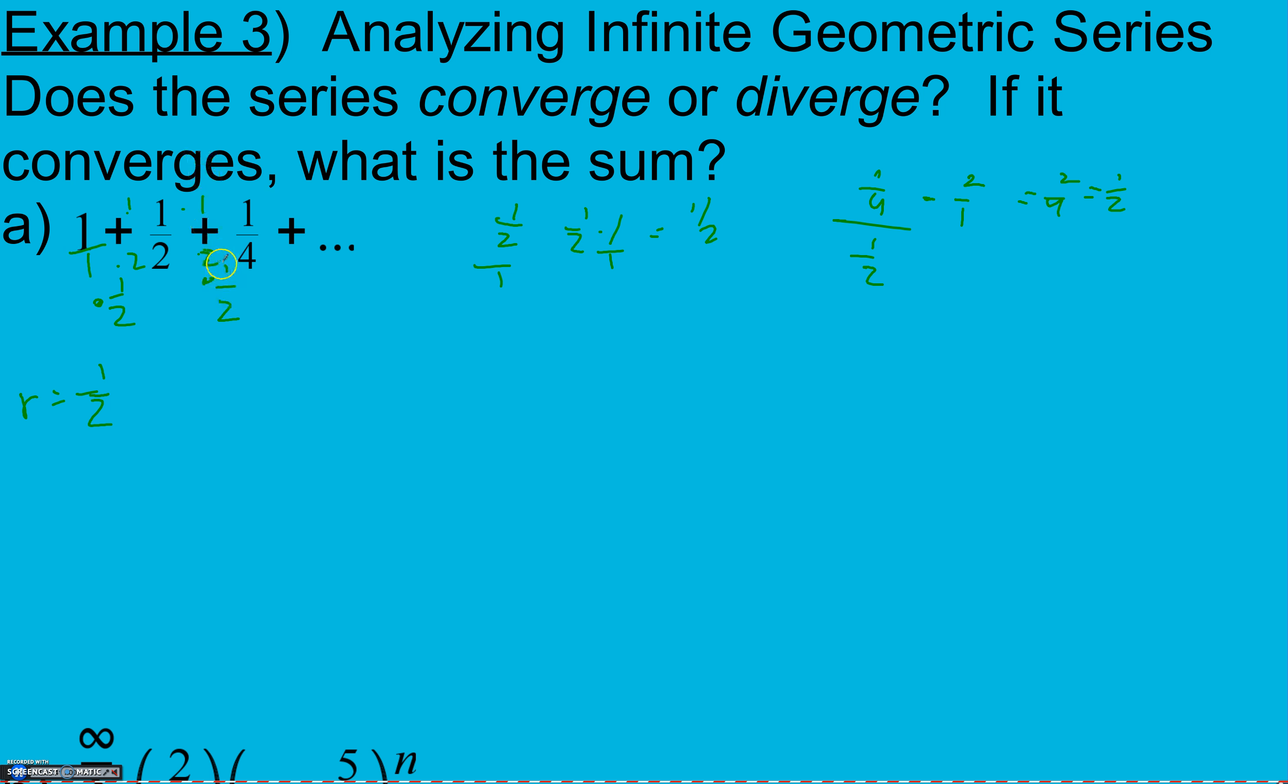Now that I know my common ratio, I can find my sum. Since this r is a half, it converges because it's less than one. My sum then is going to be my first term divided by one minus r. My first term is one divided by one minus r, half. One minus a half is a half. And when we multiply by the reciprocal here, we get two. So our sum is going to be two.